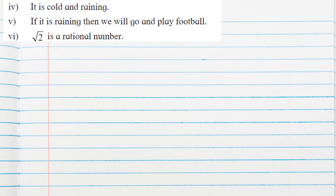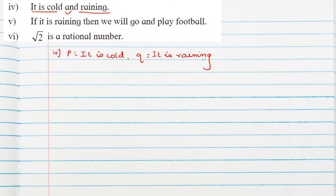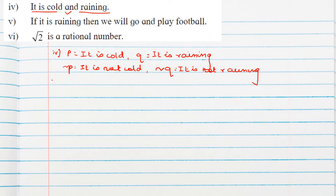Statement 4: 'It is cold and raining.' P: 'it is cold', Q: 'it is raining'. Negation P: 'it is not cold'. Negation Q: 'it is not raining'. Since the connective is 'and', the negation is negation P or negation Q. So the negation is: 'it is not cold or it is not raining.'